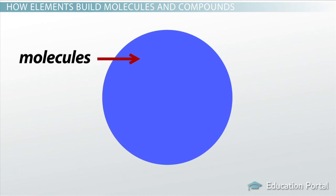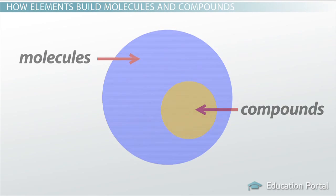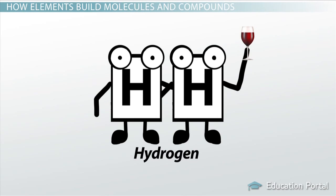All compounds are considered molecules. However, not all molecules are considered compounds. An example of a molecule not considered a compound is hydrogen, because it consists of atoms from only one type of element — hydrogen.